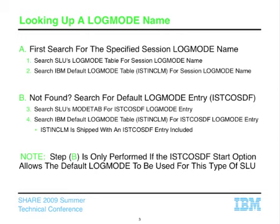The IST-COSTDF entry is actually an LU6.2 log mode entry — it's a bind image that looks like LU6.2. So you may not want to use the default log mode entry IST-COSTDF for all types of LUs. That's why we only do that second step if there's an IST-COSTDF start option indicating which types of LUs are allowed to use the default log mode entry.